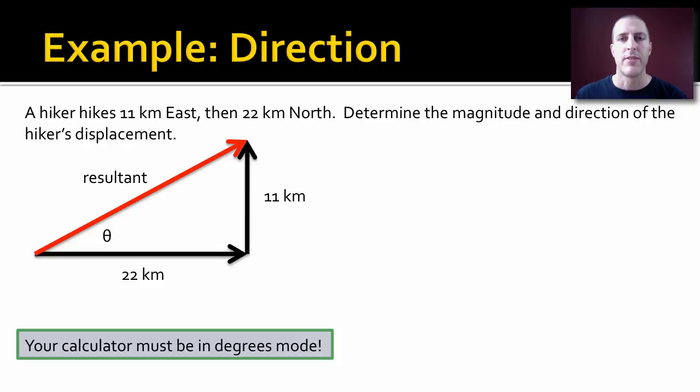To find the direction, we're going to have to use our trig functions. Now your calculator must be in degrees for this to work. Some calculators can be put into radians mode, which will give you strange answers. We have two sides of this right triangle: the opposite side and the adjacent side. So let's use tangent here.